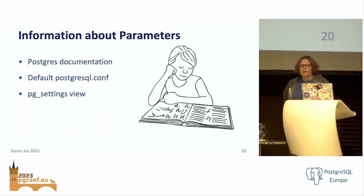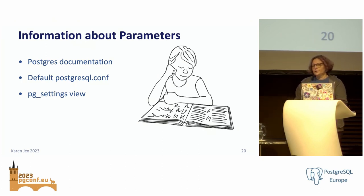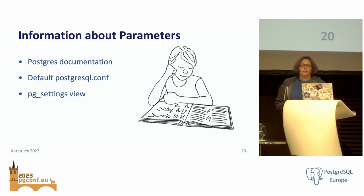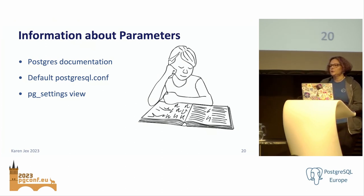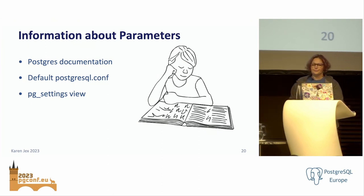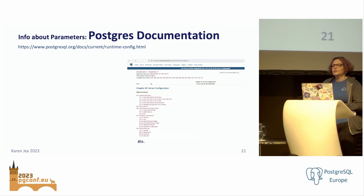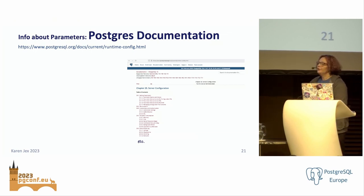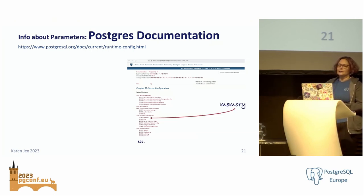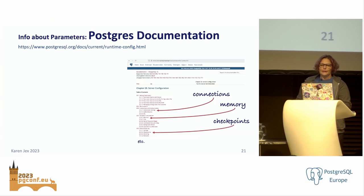If you want to know what the different parameters are, what they do, how they can be set, there are several places to look. You can look in the PostgreSQL documentation, in the default postgresql.conf configuration file, and in the pg_settings view. The server configuration section — chapter 20 of the PostgreSQL documentation — has a subsection per category of parameters, covering memory, checkpoints, connections, and so on.